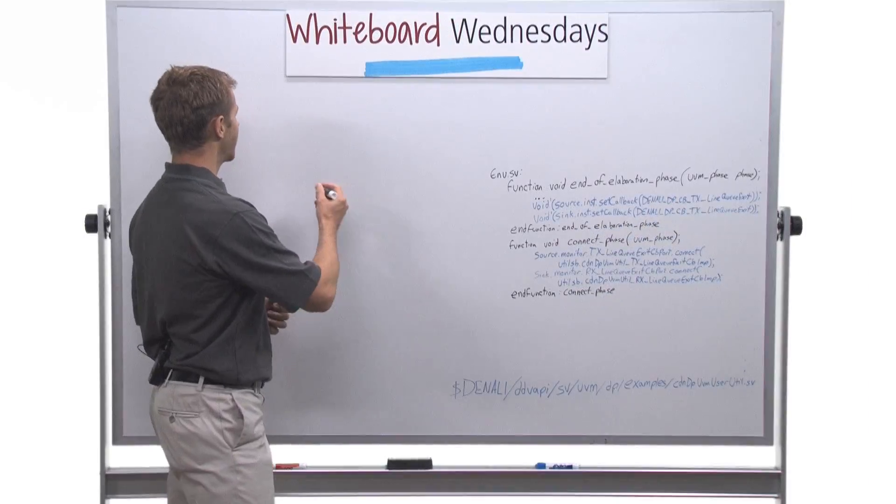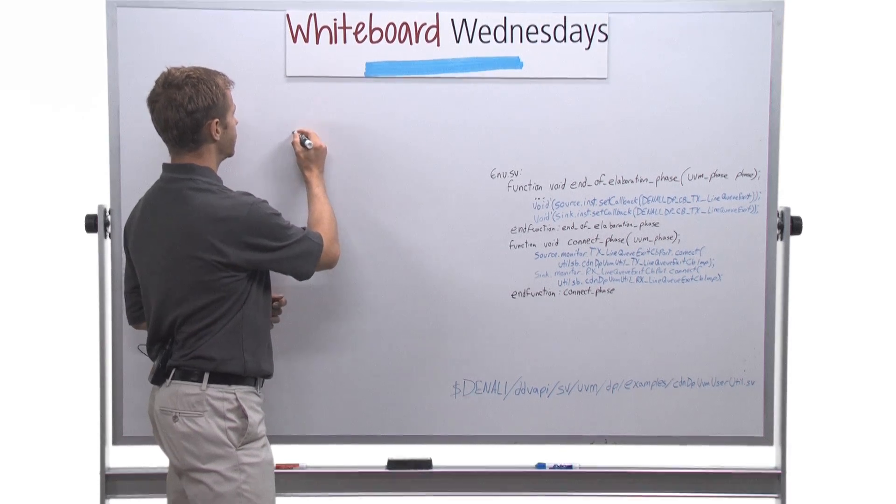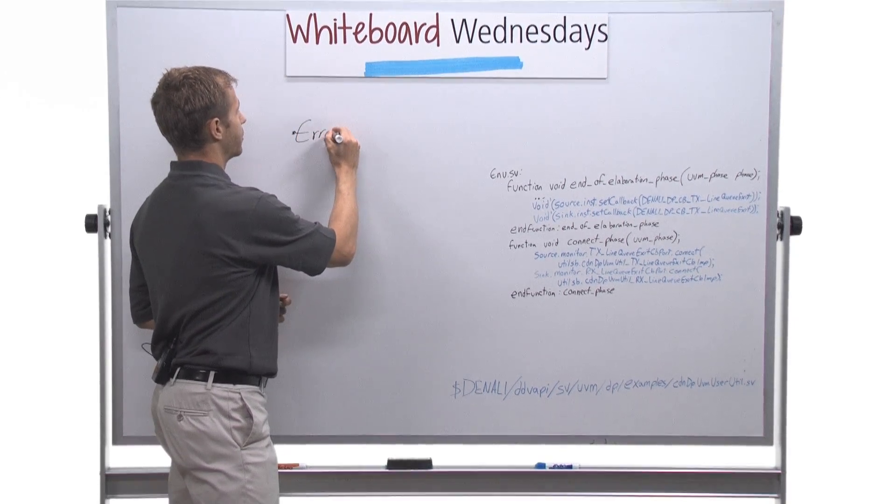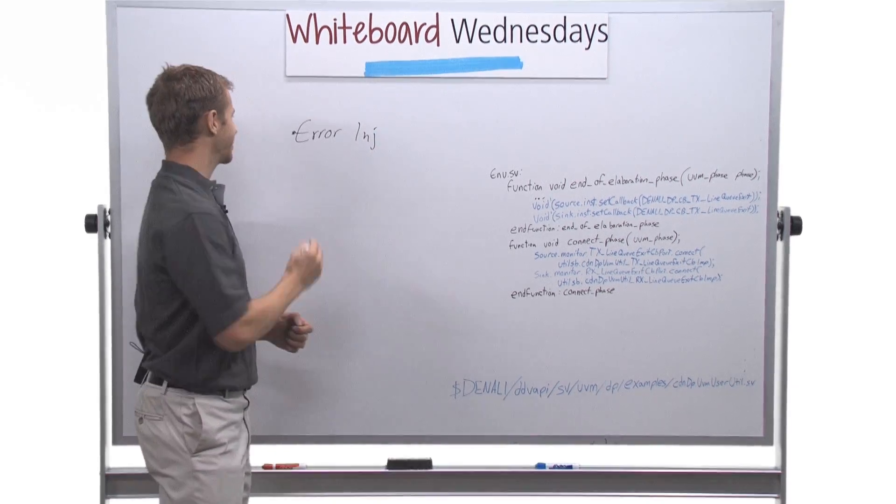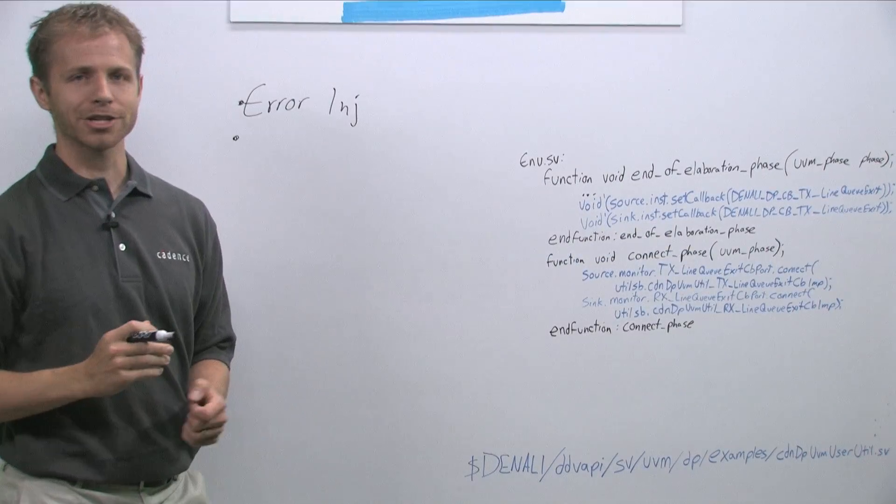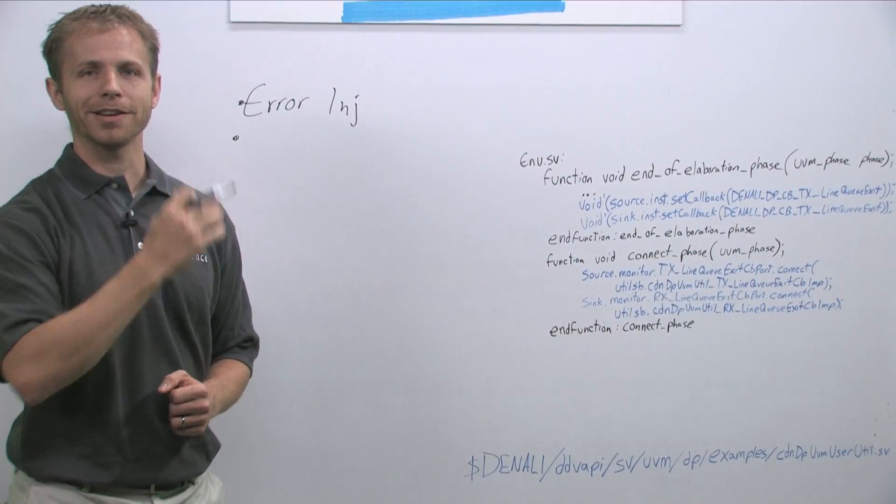These callbacks allow you to do error injection, be able to modify the transaction before it hits the wires and send it out.